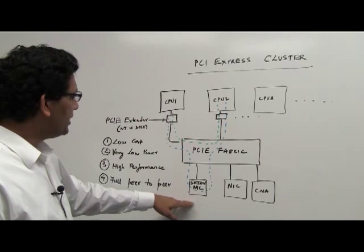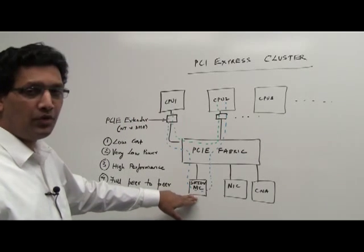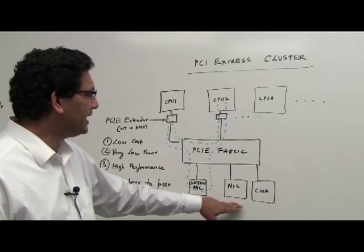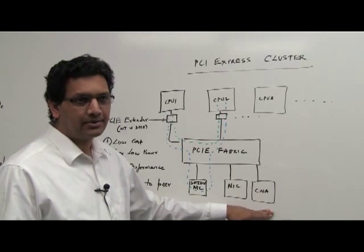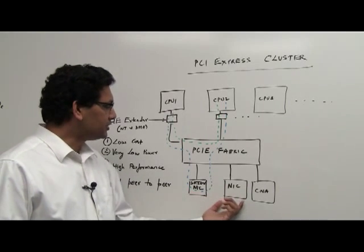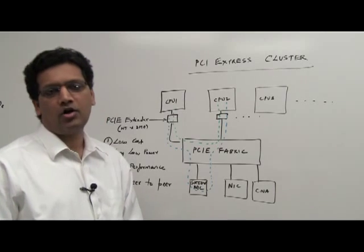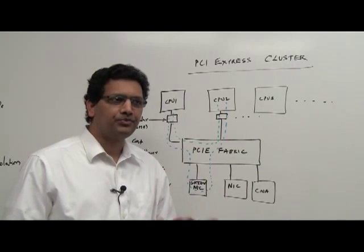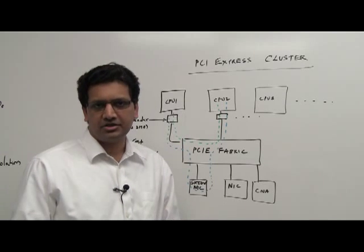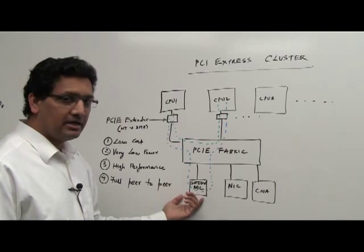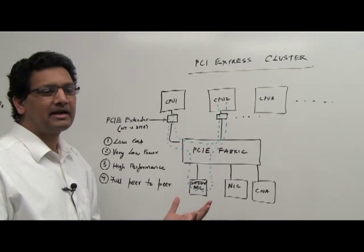What I've drawn here also is an SRIOV NIC and a normal NIC and a converged adapter, the FCOE adapters. These adapters or NICs tend to have a lot of buffering and other features that make it appropriate in a data center topology.